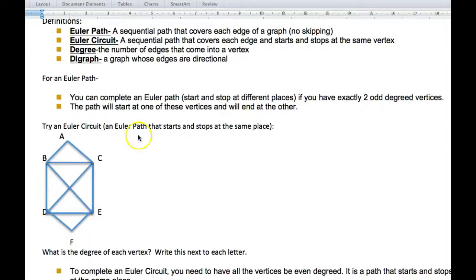Now, here's some summary that I just did. For an Euler path, you can complete an Euler path if you have exactly two odd-degree vertices. Not anymore. It's got to be exactly two. Now, I have some blanks on the pages, so you've got to write this in. The path will start at one of these vertices and end at the other. That's what happens, and just by my previous explanation.